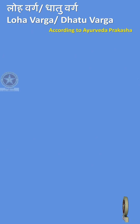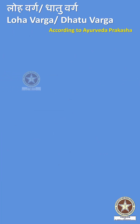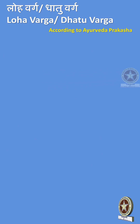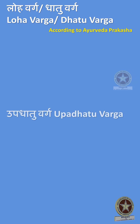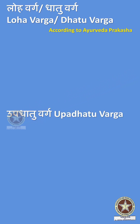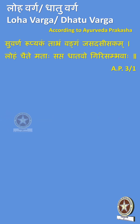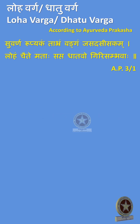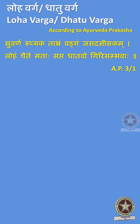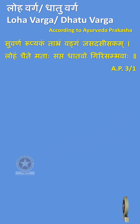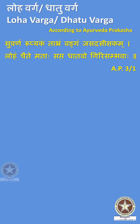According to Ayurveda Prakashah, Dhatu is classified into 7 drugs. Reference: Ayurveda Prakashah Chapter 3 Shloka 1. The shloka reads: Shuvarnam, Rupyakam, Tamraam, Vangaam, Jasada, Sishakam, Lohamcha, Ete Matah Sapta Dhatavoha Girisambhavah.